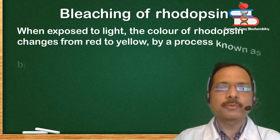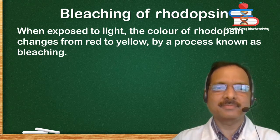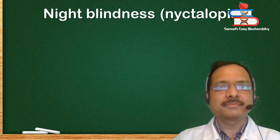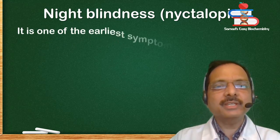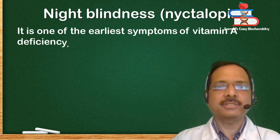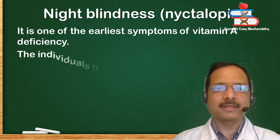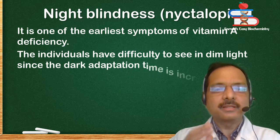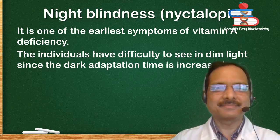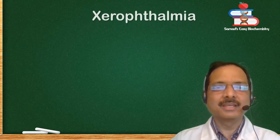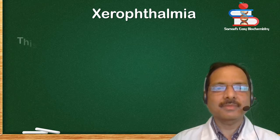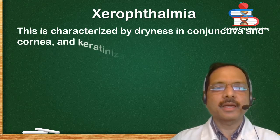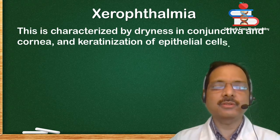Bleaching of rhodopsin: when exposed to light, the color of rhodopsin changes from red to yellow by a process known as bleaching. Night blindness, or nyctalopia, is one of the earliest symptoms of vitamin A deficiency. The individuals have difficulty seeing in dim light since the dark adaptation time is increased.